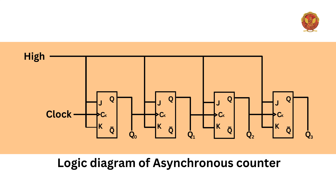When we use JK flip-flop with inputs 1-1, it toggles the stored value to the previous state. The very first flip-flop receives the main clock. The next flip-flop's clock is nothing but Q, the output of the previous flip-flop. So the state transition will occur in the second flip-flop and will ripple. When there is a change in the second flip-flop, the output of that transition is used as the clock for the next stage, so the effect is rippling.